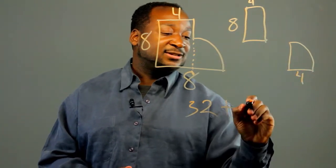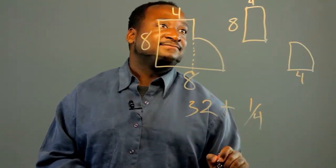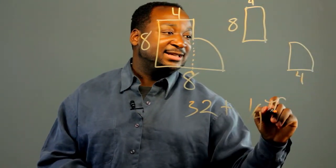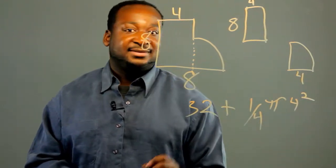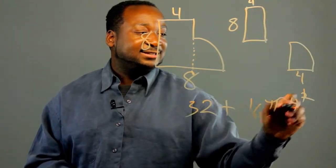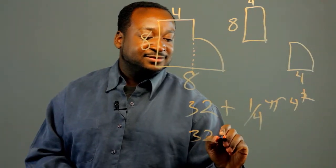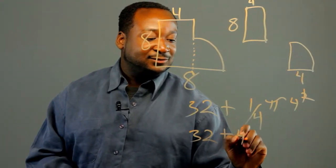We have a quarter of a circle, so that's 1 fourth. That's pi times the square of the radius, which is 4 squared. So this cancels and you get 32 plus 4 pi.